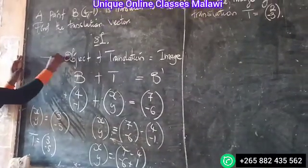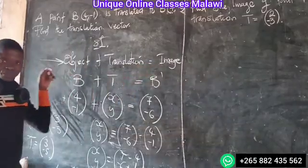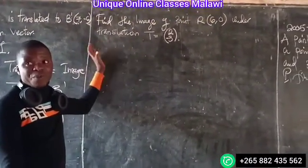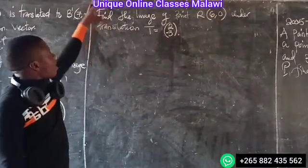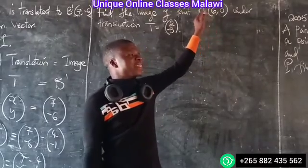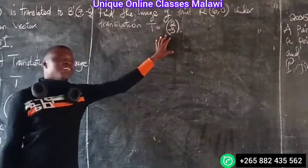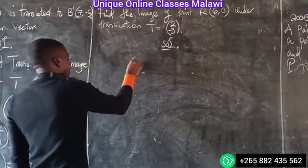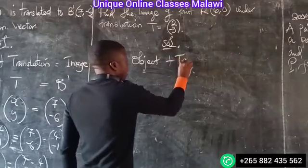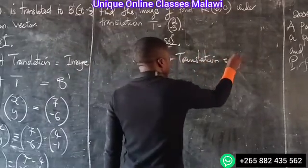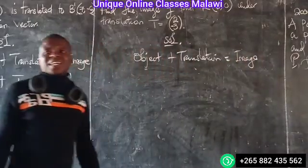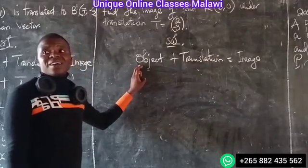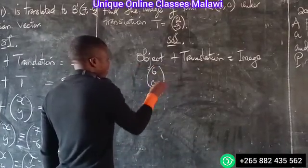The object plus translation vector equals the image. Let's do this one. So what do you need to do first? Remember the solution: object plus translation equals image. So the object is (6, 0), plus translation vector.